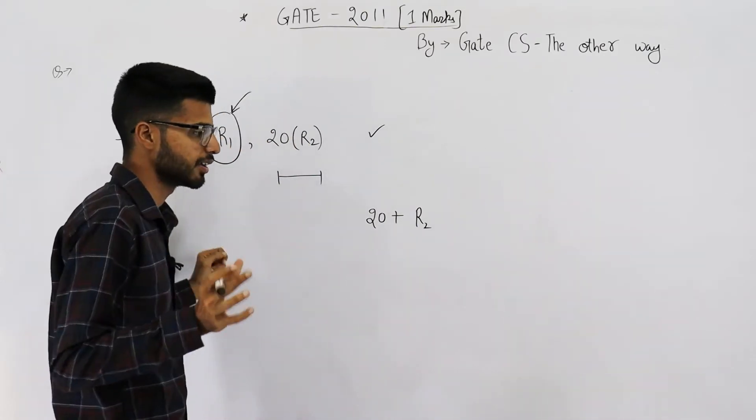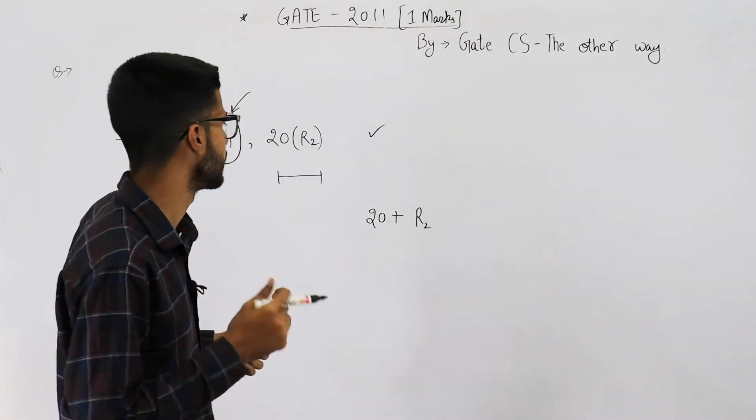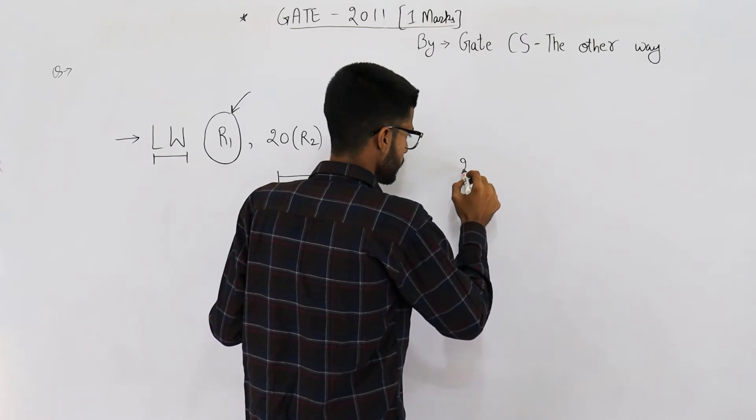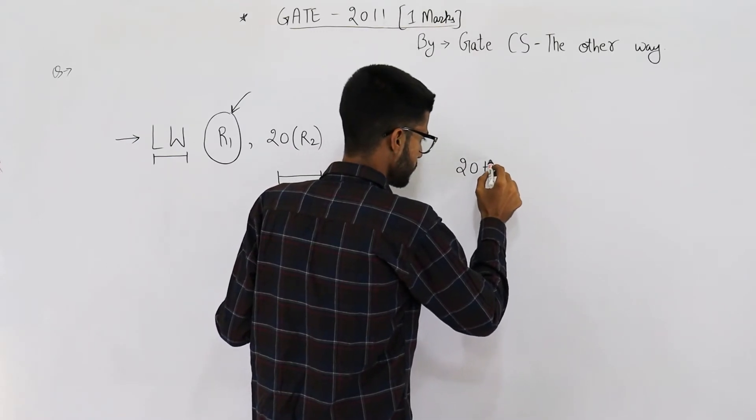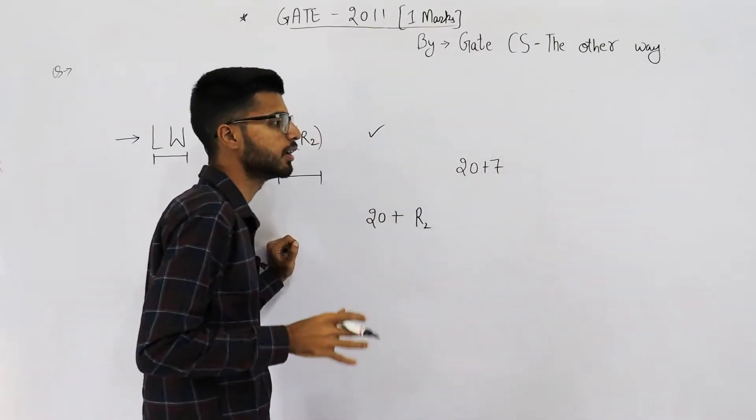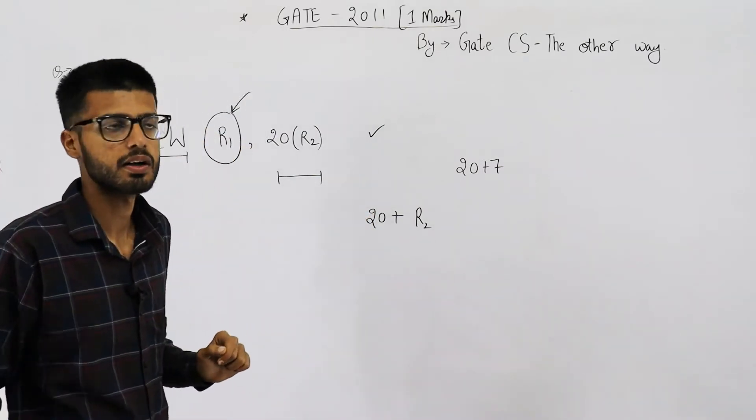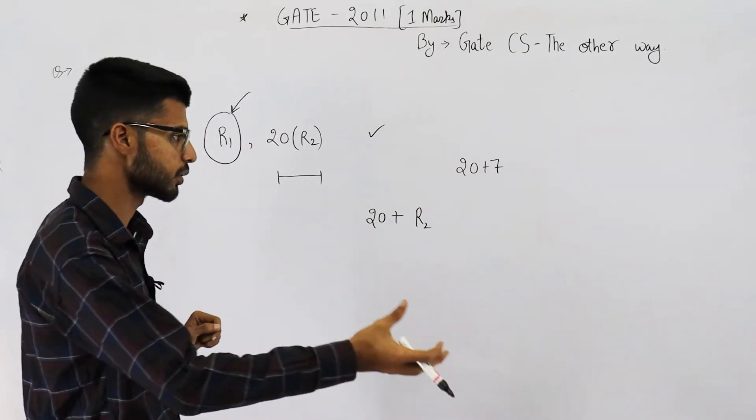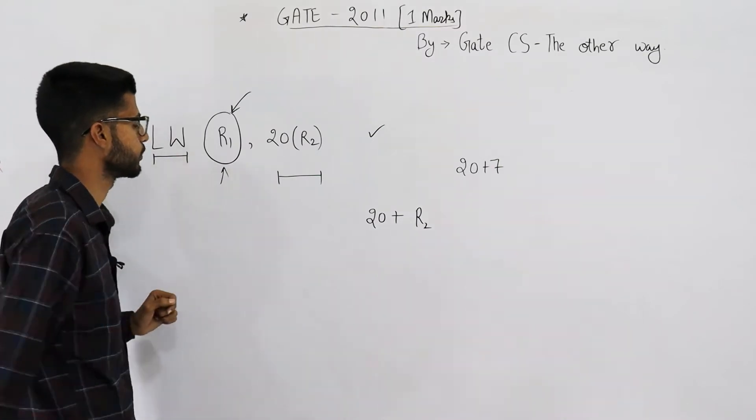For example, say we have saved 7 in R2. Then this means go to address 20 plus 7, which is 27. There you will find your actual operand. You load that operand into this register R1.